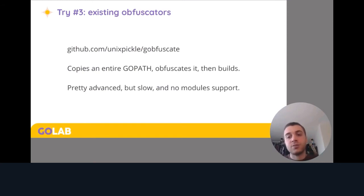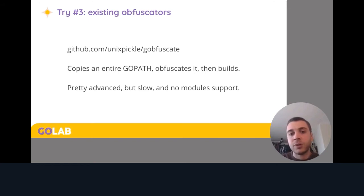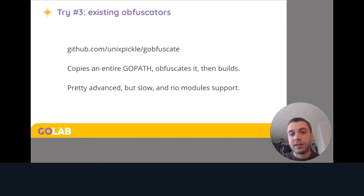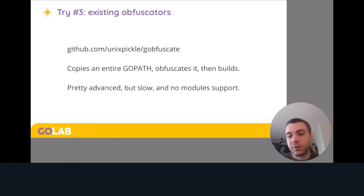Our third try: what existing obfuscators exist in Go beyond just build flags? There is one called gopfuscate, created a couple of years ago. What it does is pretty simple — it copies an entire Go path including your dependencies, obfuscates all of that code, and then builds it. This is actually pretty advanced because it can inspect your entire program in source code and make arbitrary changes. But it's pretty slow and it doesn't support modules because it was designed for the Go path world. We've been moving from Go path to modules, so this tool is a little bit outdated.